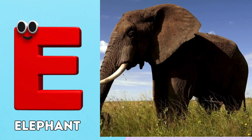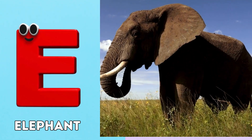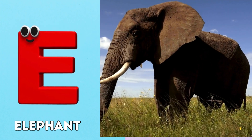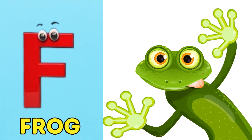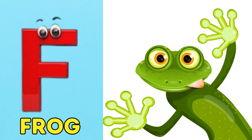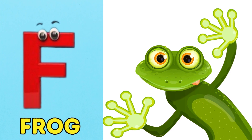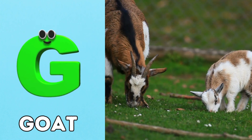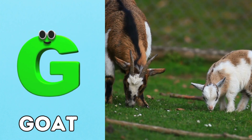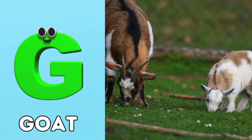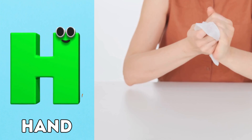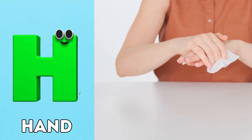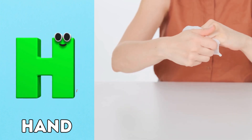E is for elephant, e-e-elephant. F is for frog, f-f-frog. G is for goat, g-g-goat. H is for hand, h-h-hand.